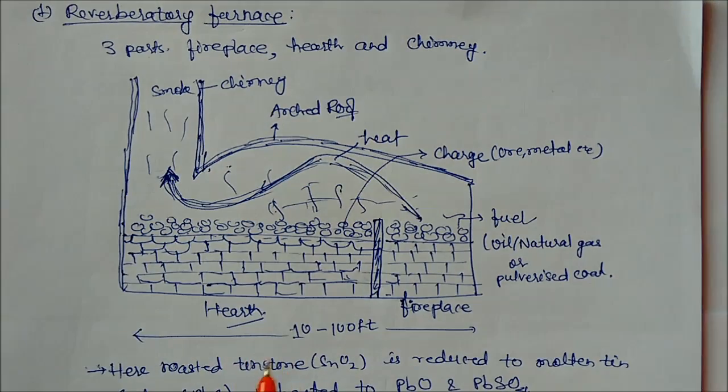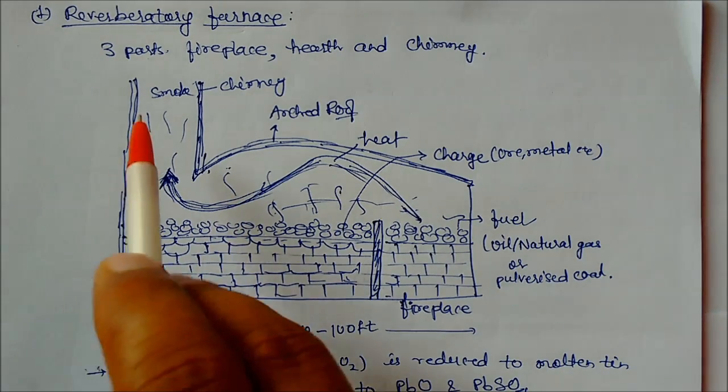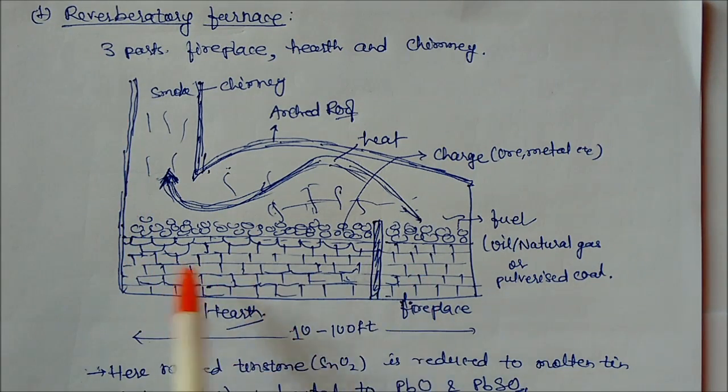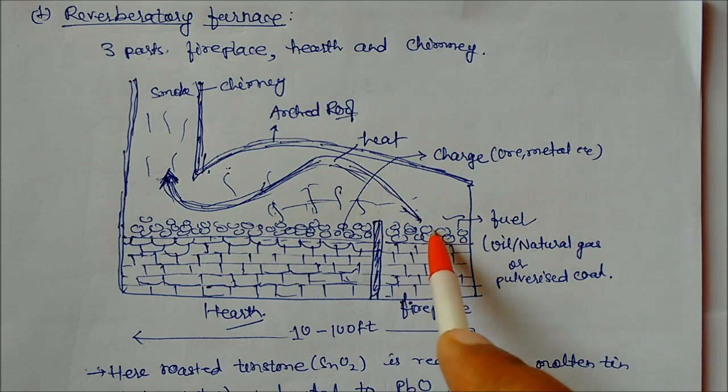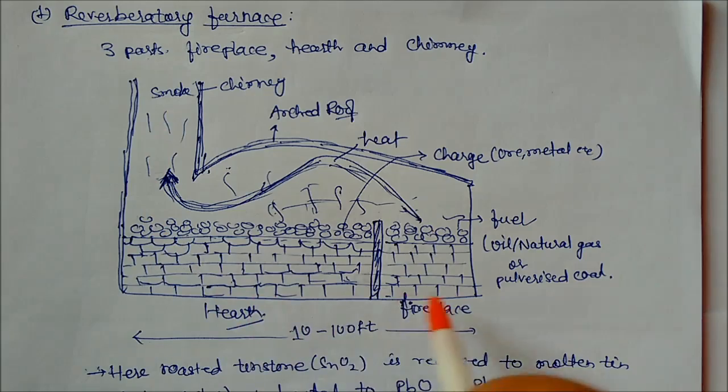First is your reverberatory furnace. You can see the diagram here. In this diagram, this is brick material. Here partition is there. In this partition there are three parts: one is fuel and fireplace, this is your hearth, and this is your chimney.